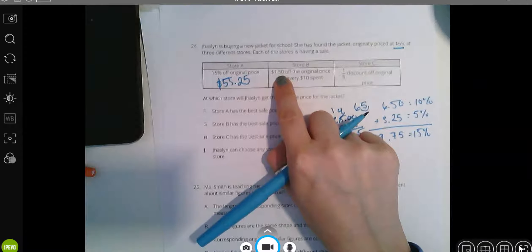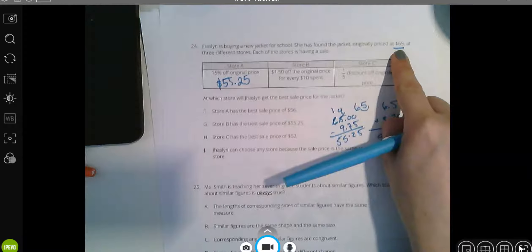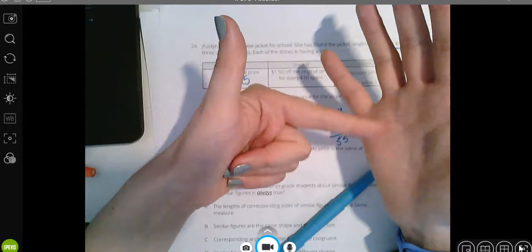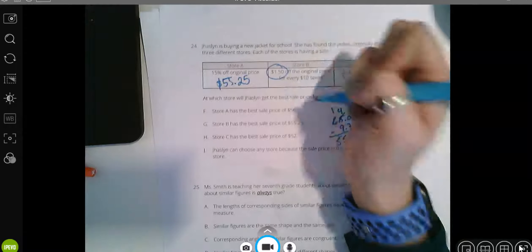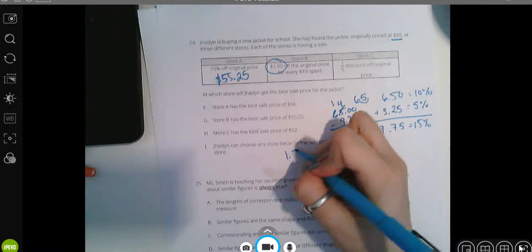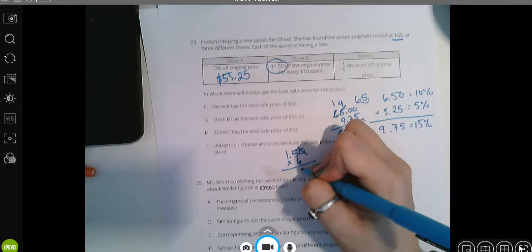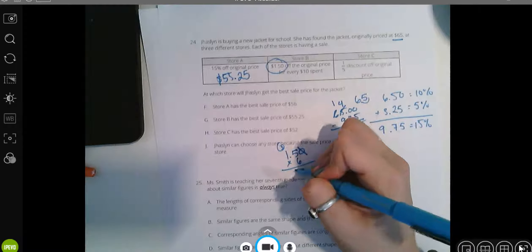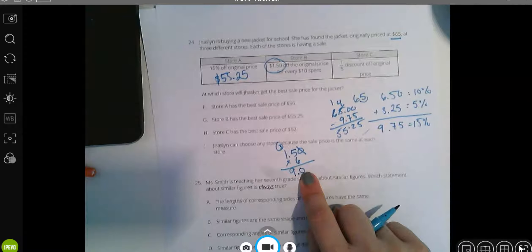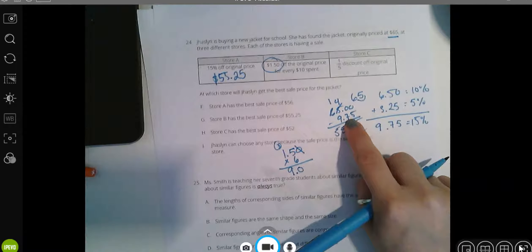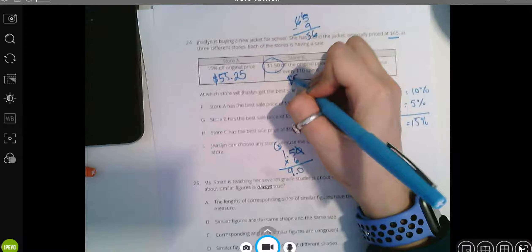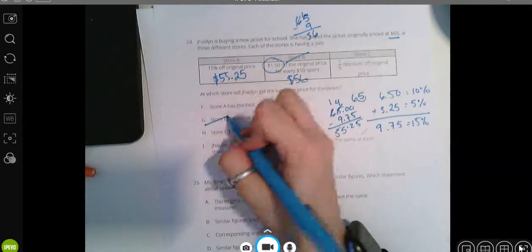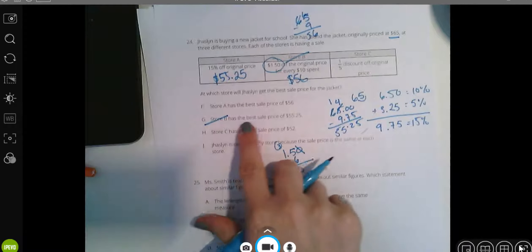At store B, she's taking $1.50 off for every $10 she spends. If the coat is $65, she's spending $10, $20, $30, $40, $50, $60. She does not get to take off that extra $1.50 for $70 because it's not quite there yet. So she's taking off six groups of 10. So she's taking off six times the $1.50. $1.50 times 6. Five times six is 30. Six times one is six plus three is nine. They're taking $9 off, which I already know is going to be less than this because here we took $9.75 off. 65 minus 9 is going to be $56. So store B is not the cheapest option.